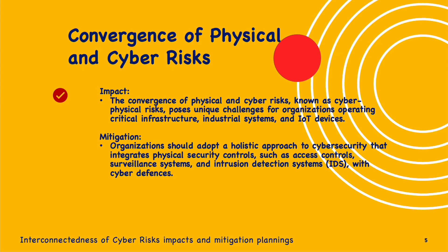Next is the convergence of physical and cyber risks. This convergence, known as cyber-physical risks, poses unique challenges for organizations operating critical infrastructure, industrial systems, and IoT devices. A cyber attack targeting operational technology systems can lead to physical damage, production disruptions, and safety hazards. For example, a cyber attack on critical infrastructure like power grids or transportation networks can result in power outages and transportation disruptions.